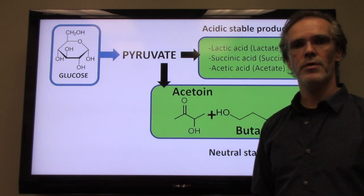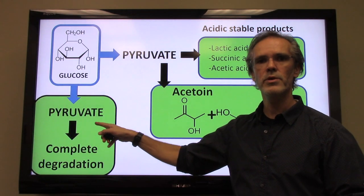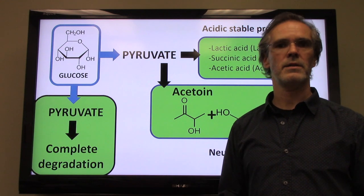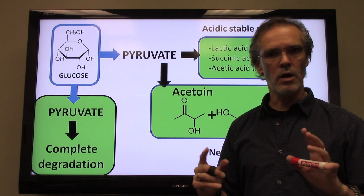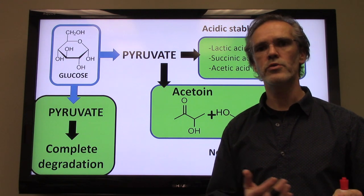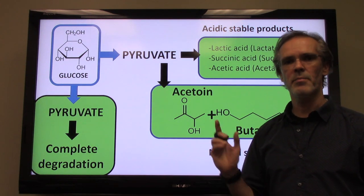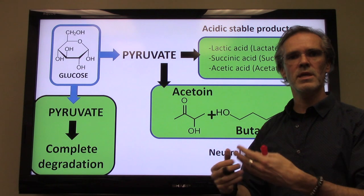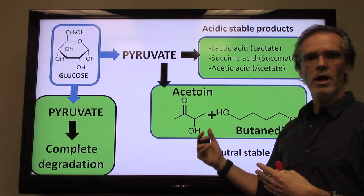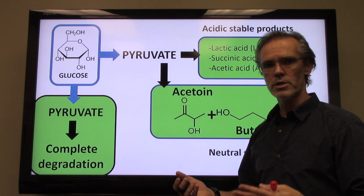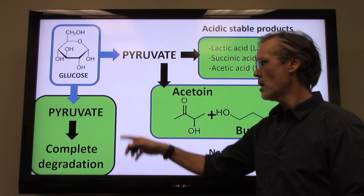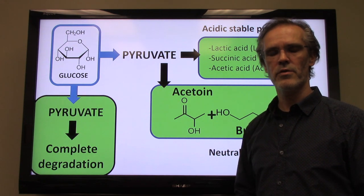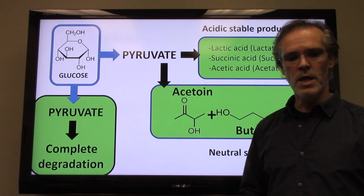Another outcome of glucose utilization is complete degradation. Pyruvate is produced from glycolysis, and then there is complete degradation of that molecule. It goes through the so-called Krebs cycle - everything gets degraded, ATP is produced. So to summarize the three different outcomes: first, acidic products; second, neutral products; or third, pyruvate and glucose can be completely degraded down to very simple molecules such as carbon dioxide.